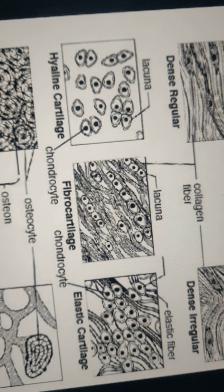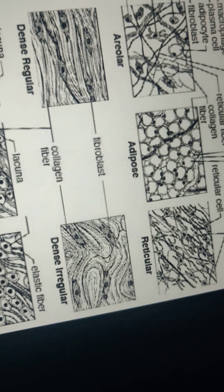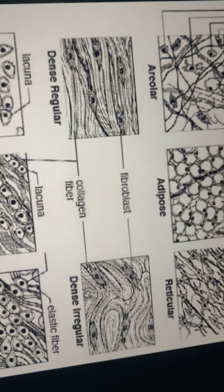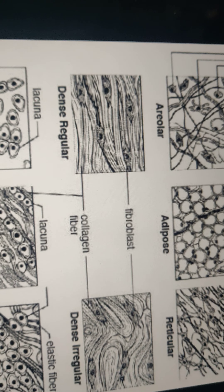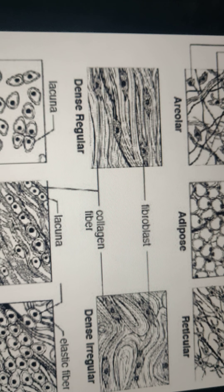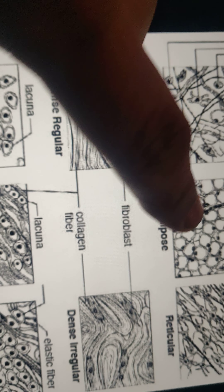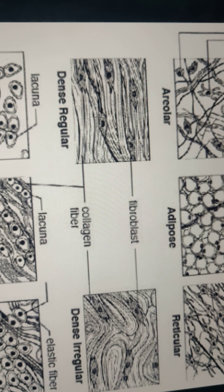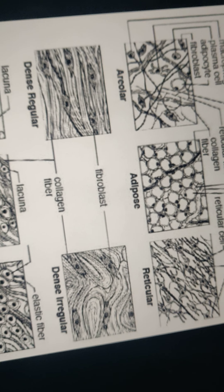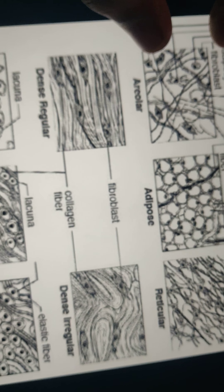Fat cells are adipose tissue cells. They may be singly present or in groups and are generally found in the adipose tissue, having various sizes and shapes.